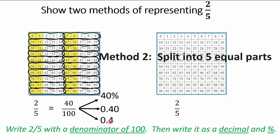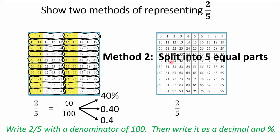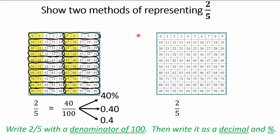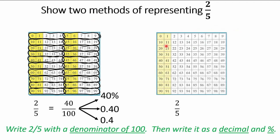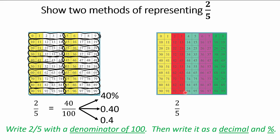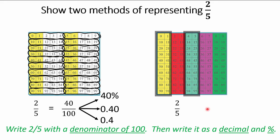Method two for two-fifths: split the whole thing into five equal parts. With a hundred tiles divided into five sections, you get 20 in each section. Out of those five sections, choose any two. Count the little ones: 40 out of 100 — no different than before. Two big chunks out of five big chunks; look at the little ones and it's 40 out of 100. It all depends on how you look at it — it's all about perspective.